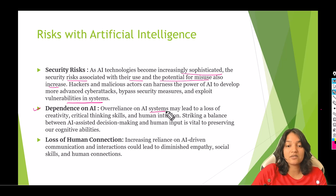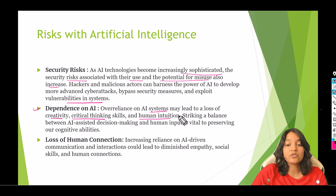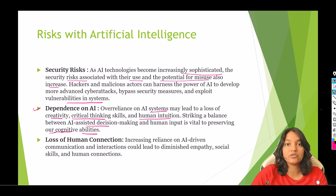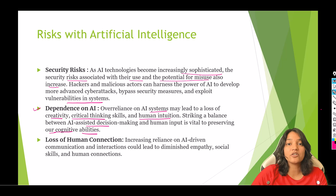Over-reliance on AI systems may lead to a loss of creativity, critical thinking skills, and human intuition. Striking a balance between AI-assisted decision-making and human input is vital to preserving our cognitive abilities. If you're asking ChatGPT to write a summary, write emails, or do everything for you, you're not using your own creative power and you're becoming more and more dependent on these AI models, which is not a good thing. You have to strike a balance between the two.